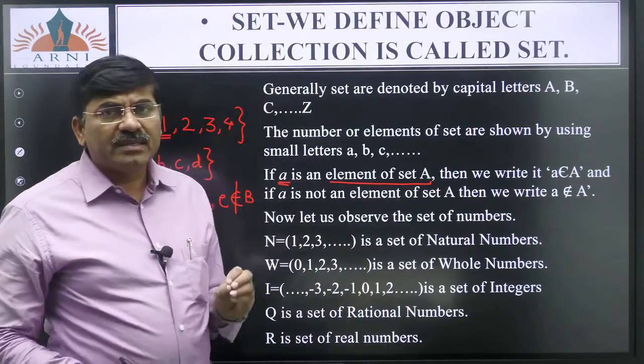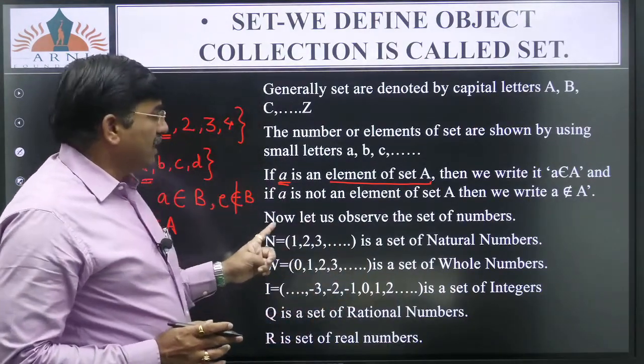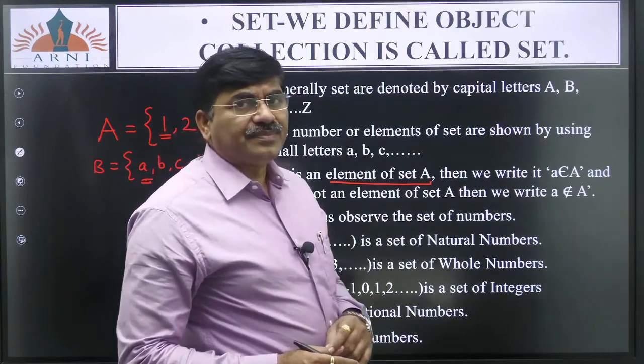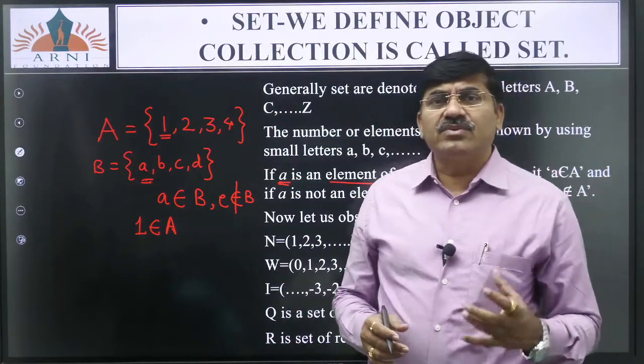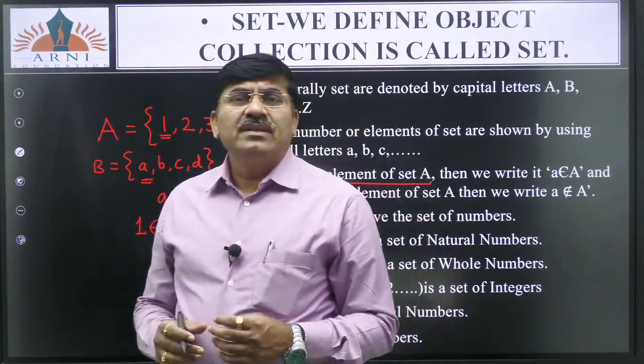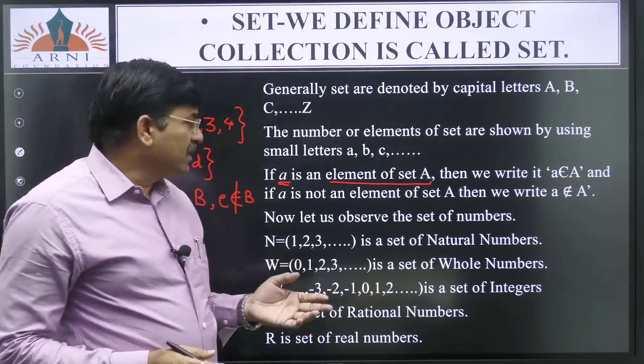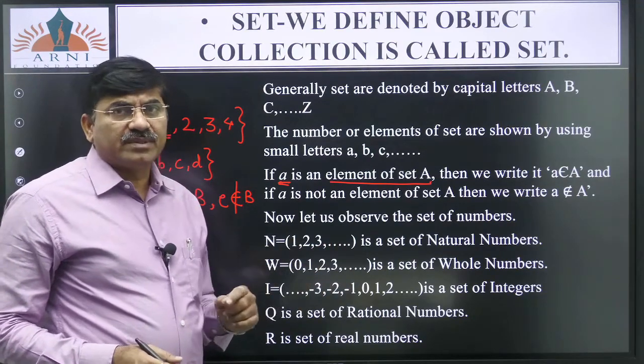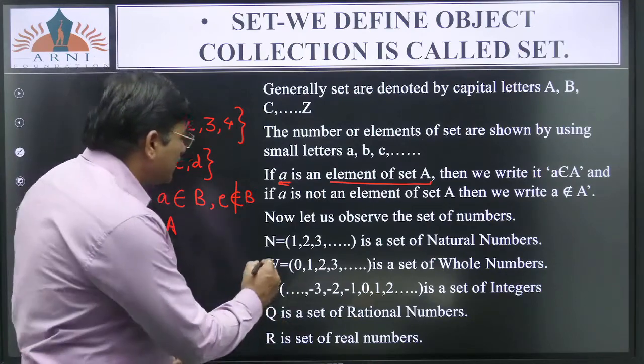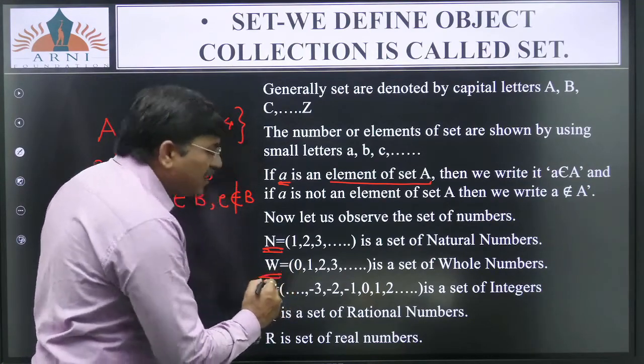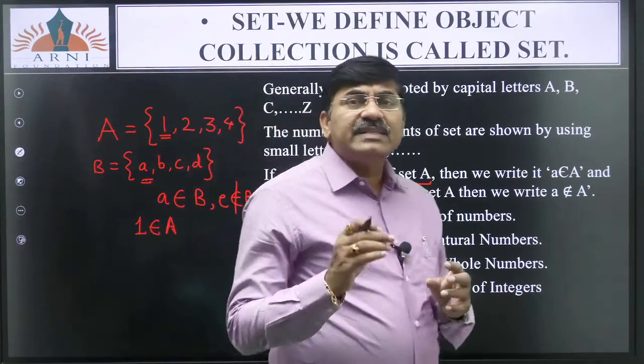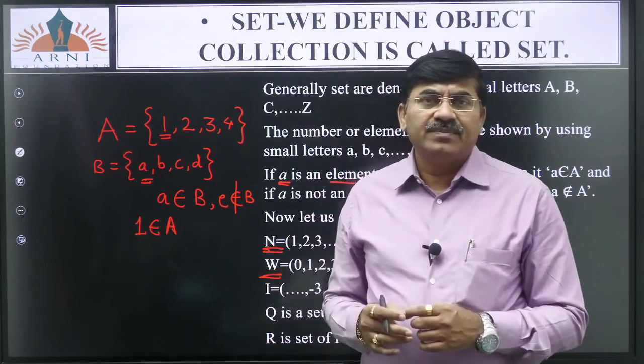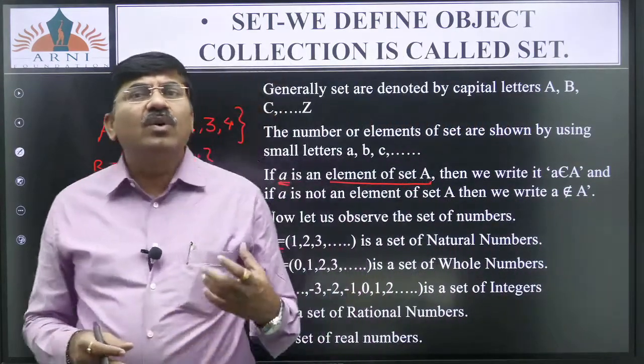So let us observe some number set of numbers. The first one is N, N is a set of natural numbers. Aaple je counting numbers ashtat 1, 2, 3, 4, 5 that counting numbers is represented in the set of natural number. And W is the set of whole numbers. Whole number manje java 0 add kela jato natural number madhe, 0 is included. Manje 0, 1, 2, 3, 4 he number aple whole number taayar hoi.